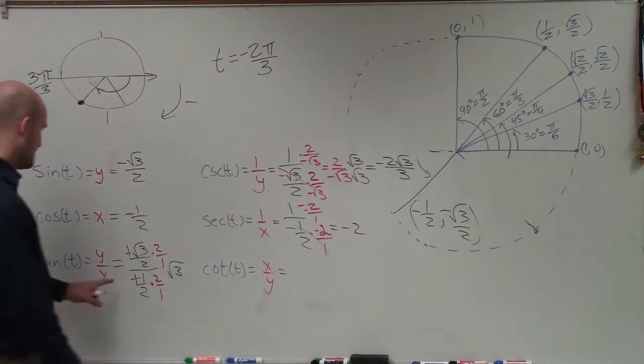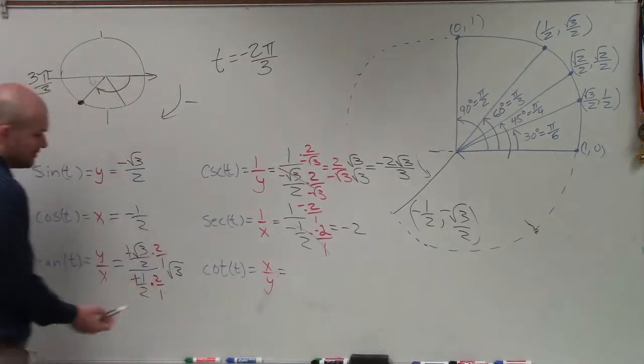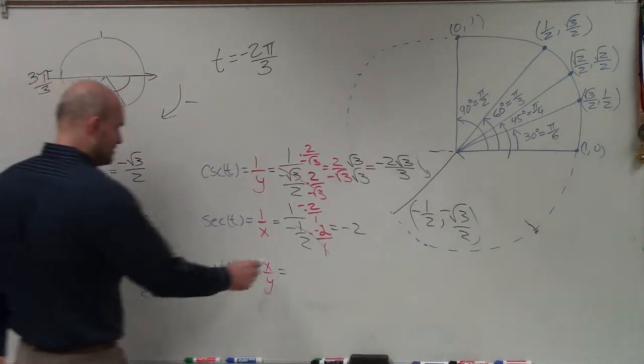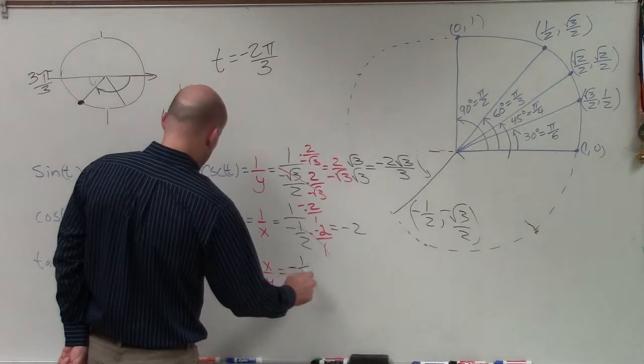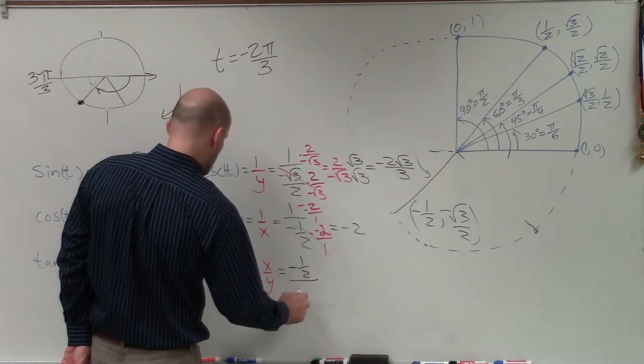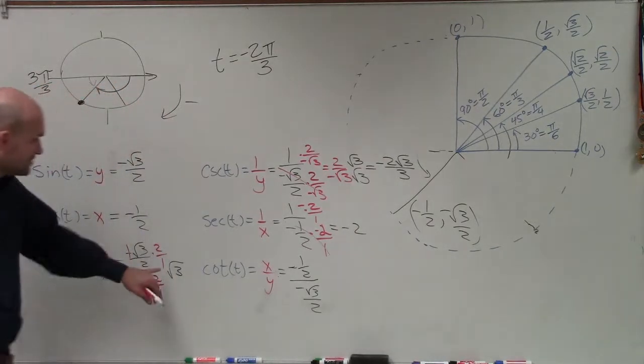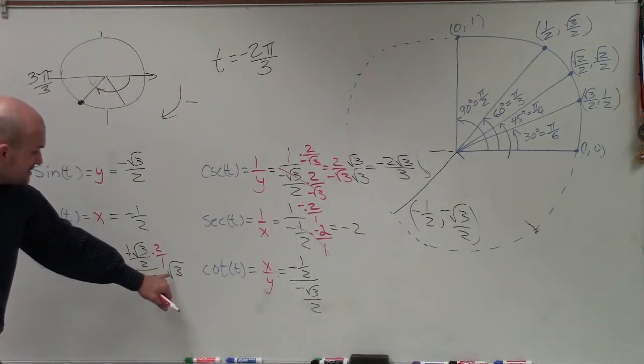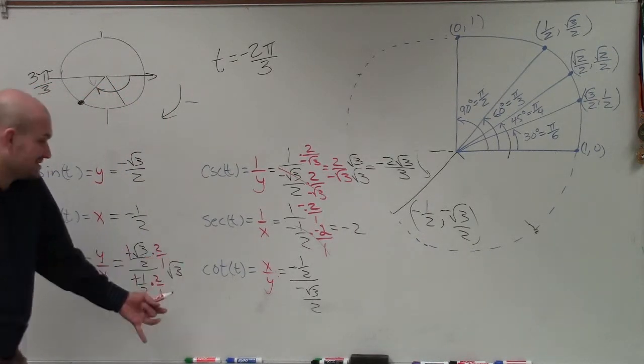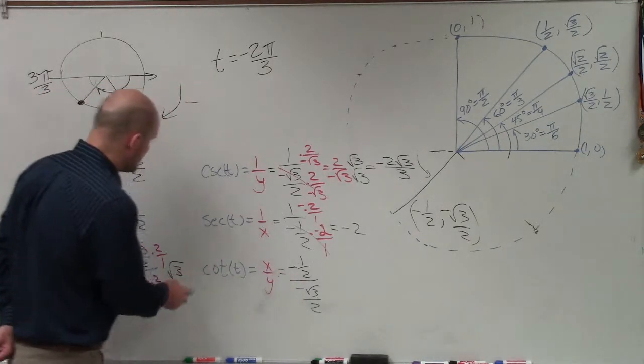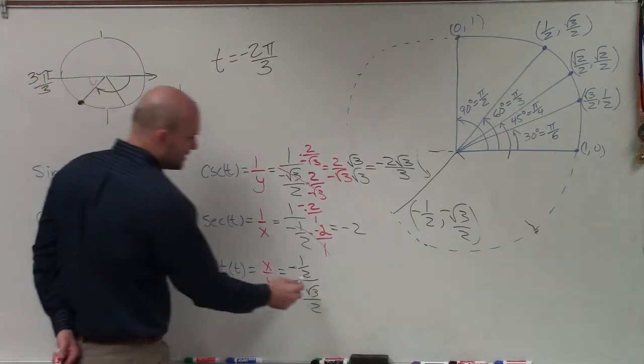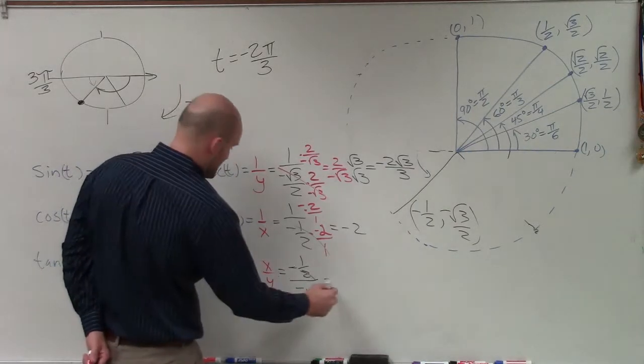Dealing with the cotangent now, one thing you can always do is you can always just take the reciprocal, which is negative 1 half divided by square root of 3 over 2. All right? Or you could also just take the reciprocal of this answer. Since this answer is square root of 3, you could just take the reciprocal of that. And you'll see, if you take the reciprocal, which would be 1 over the square root of 3, it's going to be the exact same over here.